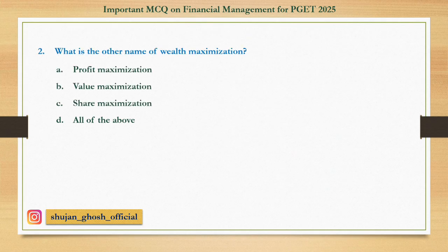Question number two: What is the other name of wealth maximization? There are two objectives of financial management — one is wealth maximization and the other is profit maximization. The options are: A: profit maximization, B: value maximization, C: share maximization, D: all of the above. Answer: value maximization.